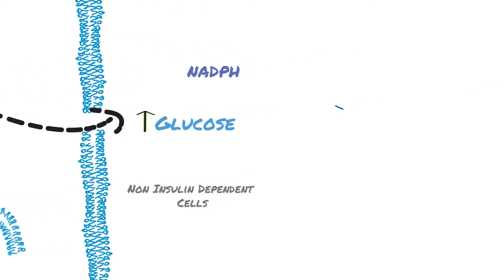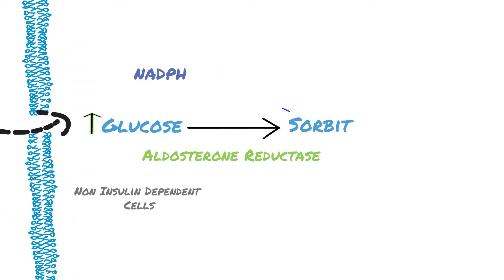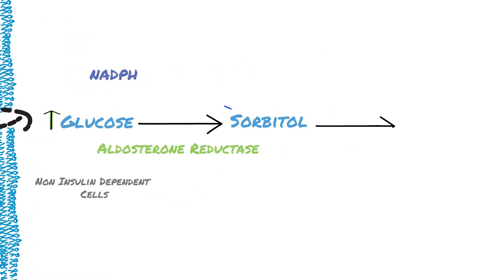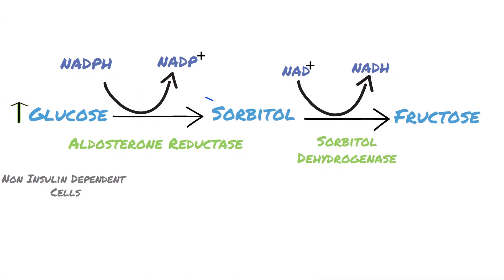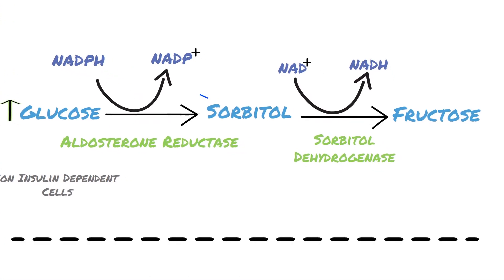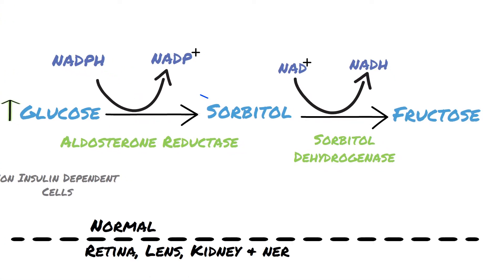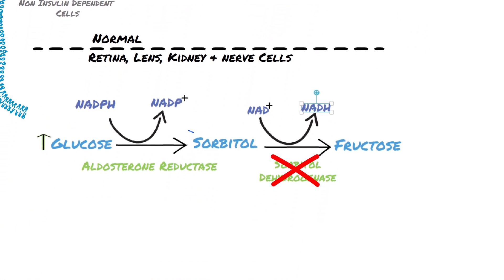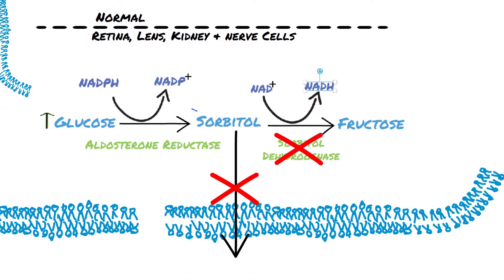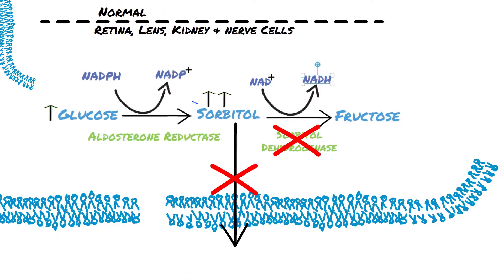The adequate supply of NADPH causes aldose reductase to produce a significant increase in the amount of sorbitol. This reaction is catalyzed by aldose reductase and sorbitol dehydrogenase. However, sorbitol dehydrogenase is absent in certain cells such as the retina, lens, kidney, and nerves.